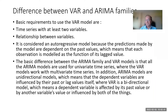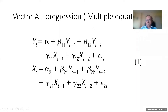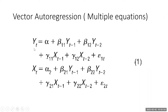In vector autoregression, there are multiple equations. Yt equals alpha (constant) plus B11·Yt-1 plus B12·Yt-2 — lagged values of the dependent variable — plus Xt-1 plus Xt-2 — lagged values of the independent variable — plus error. Because Y depends upon X and X also depends upon Y, we write a second equation: Xt equals alpha2 plus B21·Yt-1 plus B22·Yt-2, plus the independent variable lags, plus error.